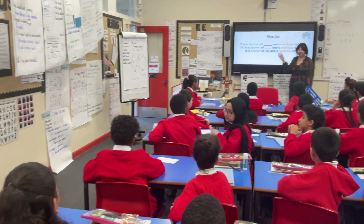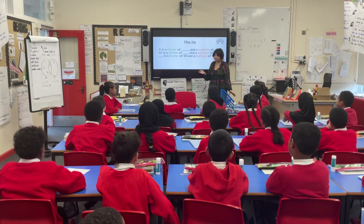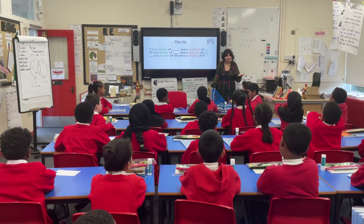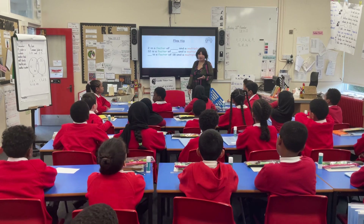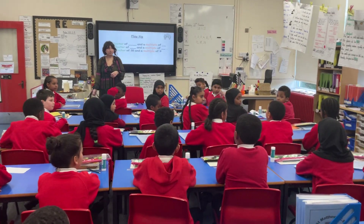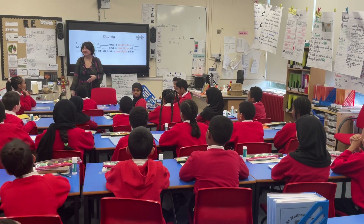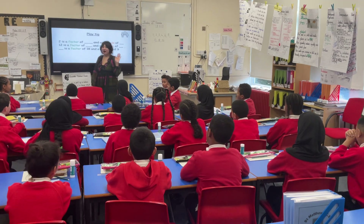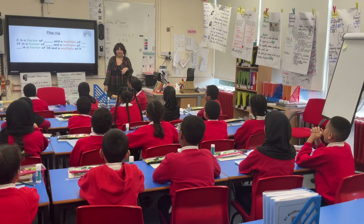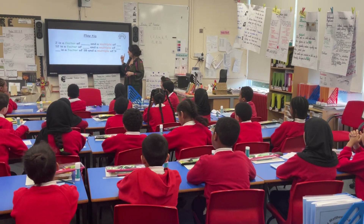Two is a factor of four and a multiple of one. Perfect. Two is a factor of four because I can divide four by two and get a whole number, and it's a multiple of one. Who can change it? Who's got a different answer? There's not just one. Hassan: two is a factor of two and a multiple of two. Two divided by two is one. And it's a multiple of two — one times two is two.